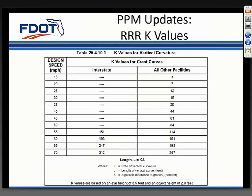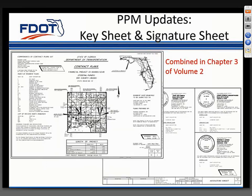This concludes the discussion of Volume 1, so now we'll move on to Volume 2. In Volume 2, we combined, reorganized, and cleaned up Chapters 3 and 30. It made sense to move the signature sheet information from Chapter 30 into Chapter 3 since it follows the key sheet in the plan set. A lot of the text for the key sheet was moved or slightly revised, but the only requirement that actually changed was the scale bar, which is now optional.